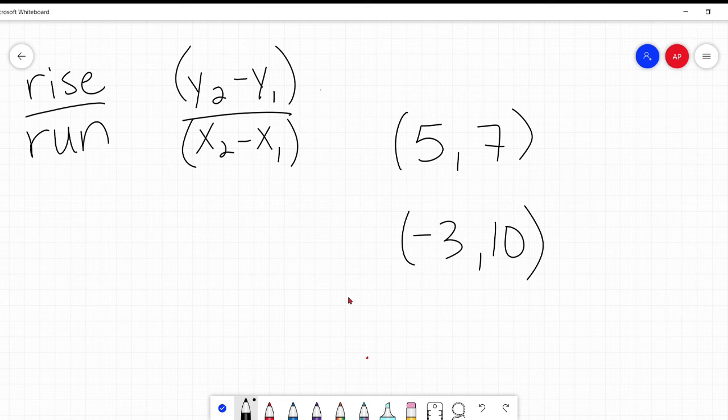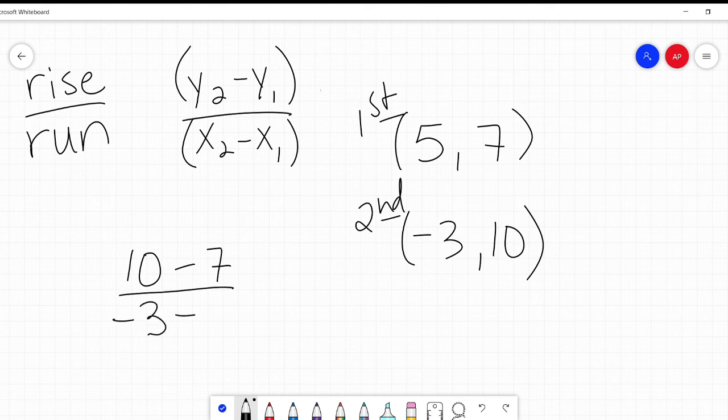So, if the method I'm showing you is a little bit different, please defer to theirs and use theirs when you're on that test. All right. So, let's try, say this is our first point and this is our second. And I'm going to do it both ways, just so you see how you get the same answer either way. So, let's say our second point, I'm going to use the Y from the second point minus the Y from the first point. And then I'm going to take the X from the second point minus the X from the first point. 10 minus 7 is 3. Negative 3 minus 5 is negative 8. So, negative 3 eighths is my slope.